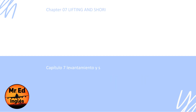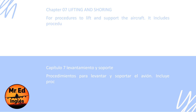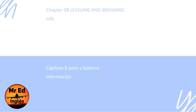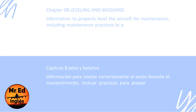Chapter 7: Lifting and shoring. Procedures to lift and support the aircraft, including procedures for jacking the aircraft for maintenance and repair. Chapter 8: Leveling and weighing. Information to properly level the aircraft for maintenance, including maintenance practices to prepare the aircraft for weighing.